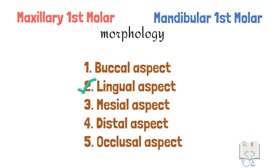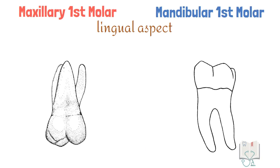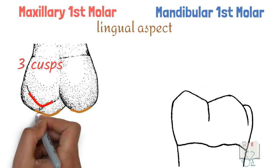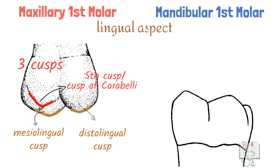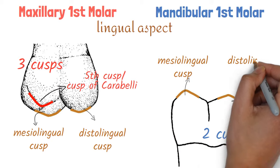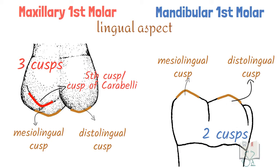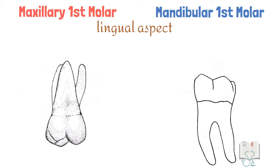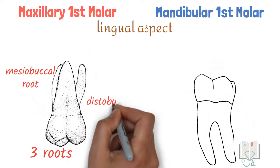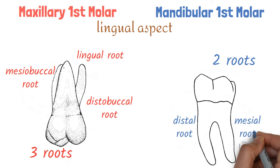Next, the lingual aspect. From the lingual aspect, in maxillary first molar three cusps are visible: mesolingual cusp, distolingual cusp, and the cusp of Carabelli, whereas in mandibular first molar two cusps are visible: mesolingual cusp and distolingual cusp. In maxillary first molar, mesolingual cusp is larger than distolingual cusp, whereas in mandibular first molar both lingual cusps are of equal size, though the mesolingual cusp tip is higher. In maxillary first molar all three roots are visible, and in mandibular first molar both roots are visible.